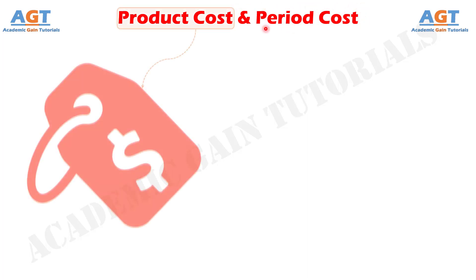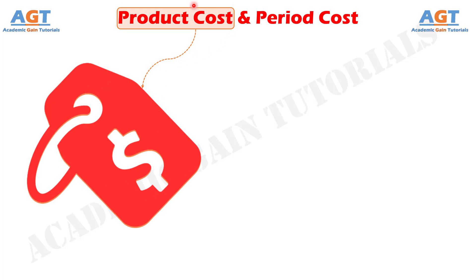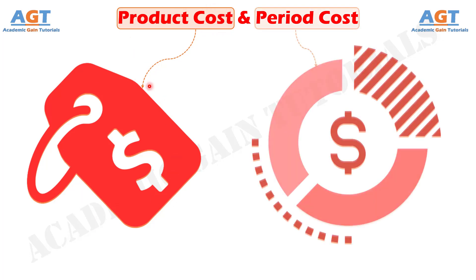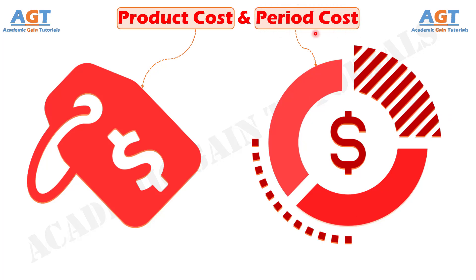Product cost is the cost that is attributable to the product — that is, the cost which is traceable to the product and is a part of inventory values. On the contrary, period cost is just opposite to product cost. As they are not related to production, they cannot be apportioned to the product, as it is charged to the period in which they arise.